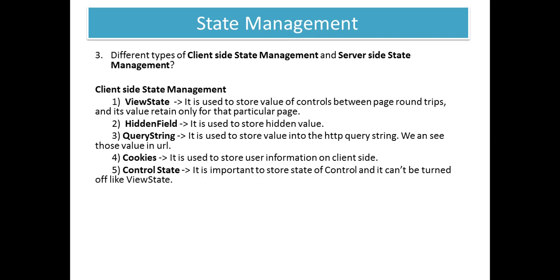First one is view state, second is hidden field, third one is query string, fourth one is cookie, and fifth one is control state. View state is used to store the value of controls between page round trips and its value is retained only for that particular page. So if there is some value in a text box, to retain that value during post back, view state is used.